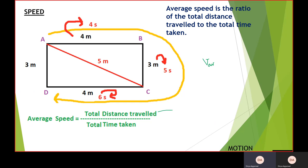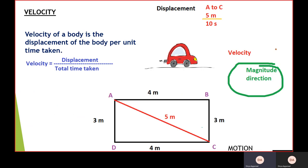Average speed is the total distance traveled by the total time taken. So the total distance traveled from A to C is 4 plus 3 plus 4, that will give me 11 meters. And the total time taken would be 4 plus 5 plus 6, which will give me 15 seconds. So this is my average speed, which is 11 by 15 meter per second.